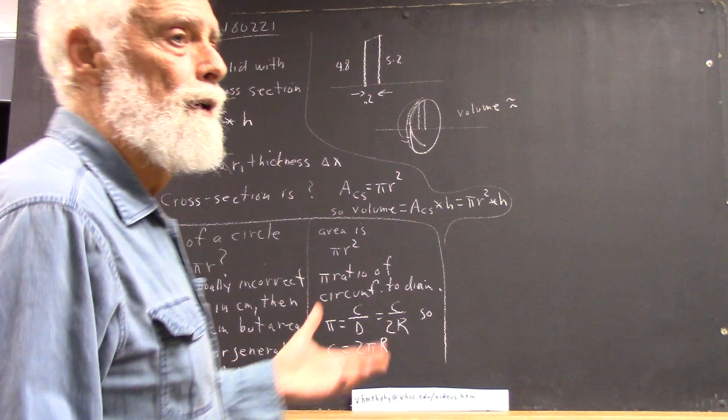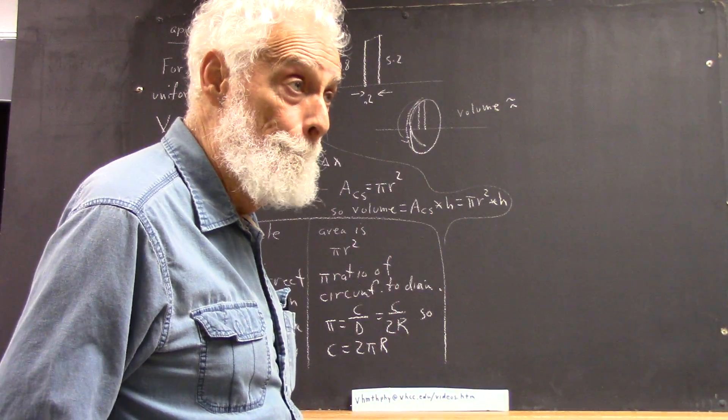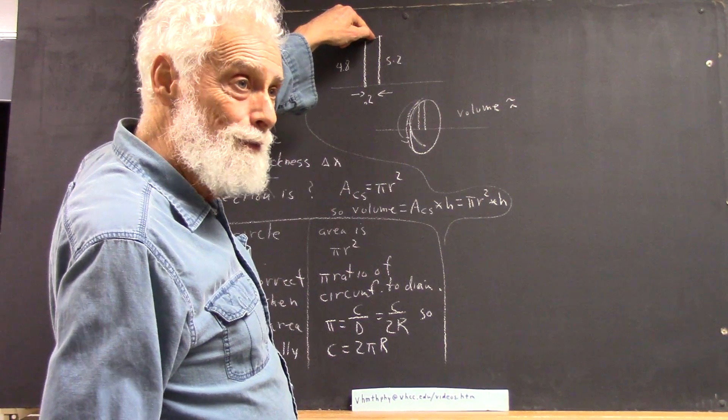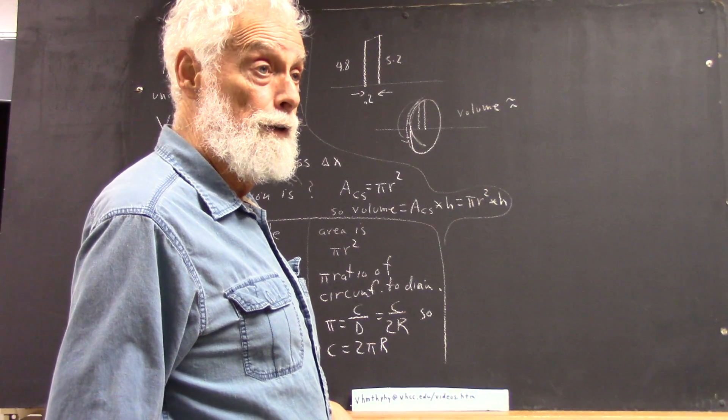Well, we've got to use a radius, because the cross-section's going to be a circle. But we're not going to be far wrong if we use the average altitude to calculate the cross-sectional area.